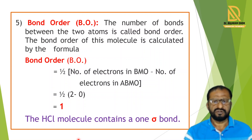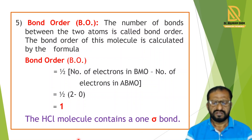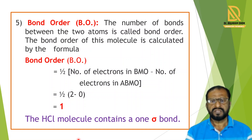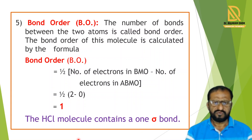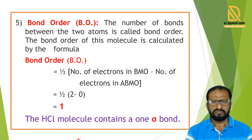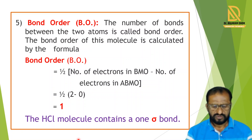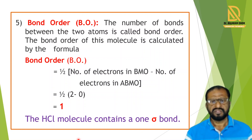Now we calculate the bond order of HCl. The formula is: bond order = ½ × (number of electrons in bonding MO − number of electrons in antibonding MO). From the diagram, the bonding MO has two electrons and the antibonding MO has zero electrons. So bond order = (2 − 0) / 2 = 1. Therefore, HCl contains one bond, and that is a sigma bond.